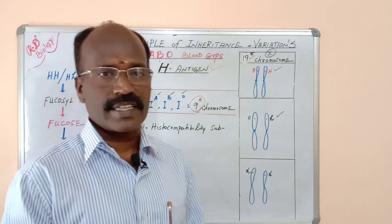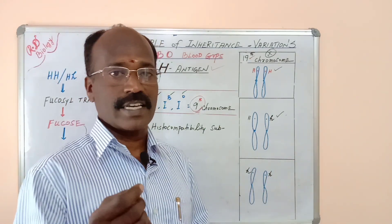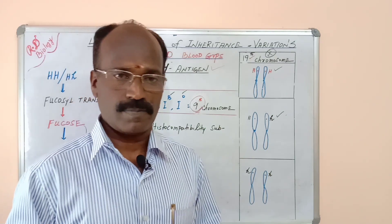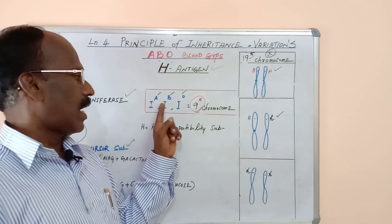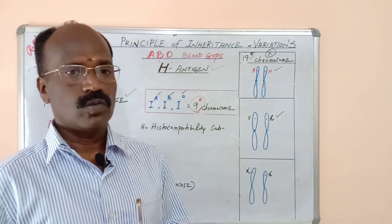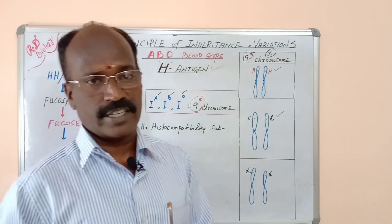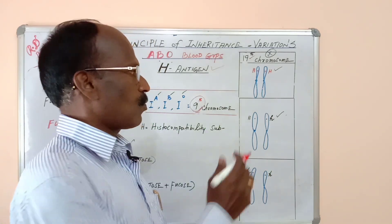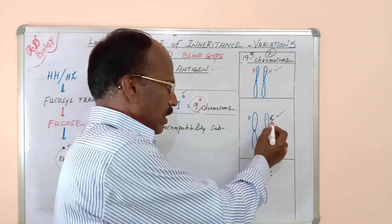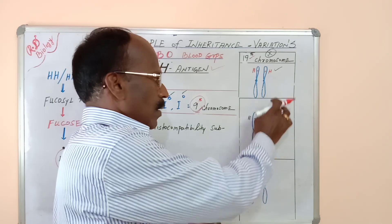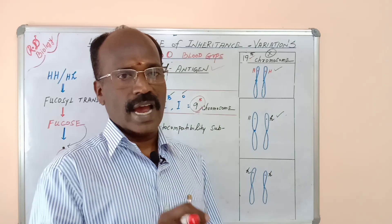If there is any error or mutation in either the 9th or 19th chromosome, you may have an error in your blood group system. The 9th pair has allele A, allele B, and allele O. Whereas the 19th pair has allele H, which is responsible for H antigen. These alleles may be found in homozygous dominant or heterozygous dominant form.